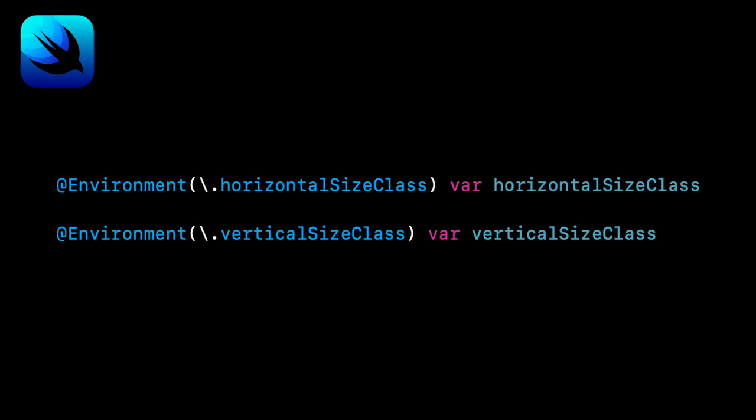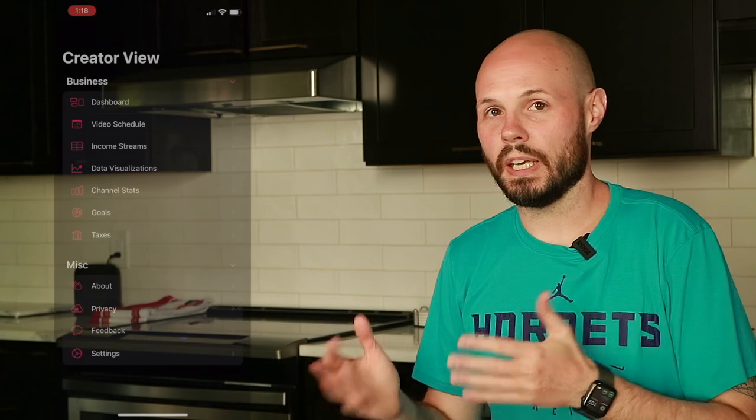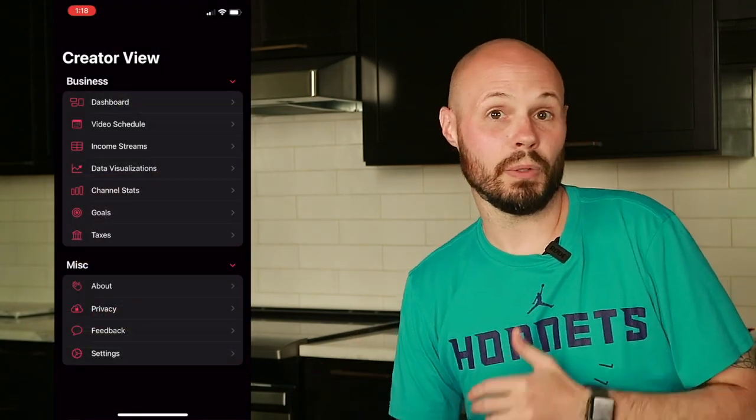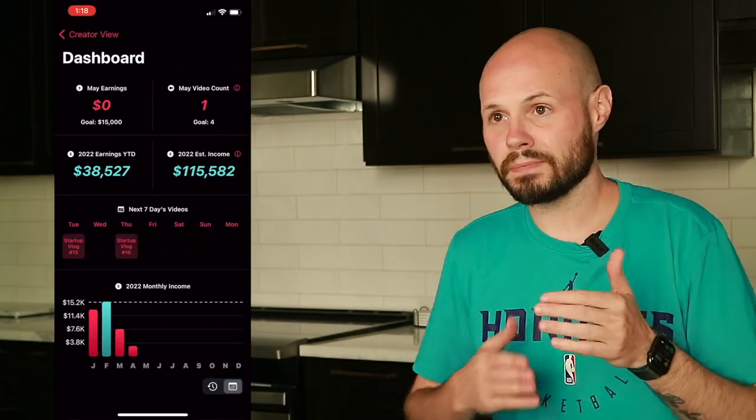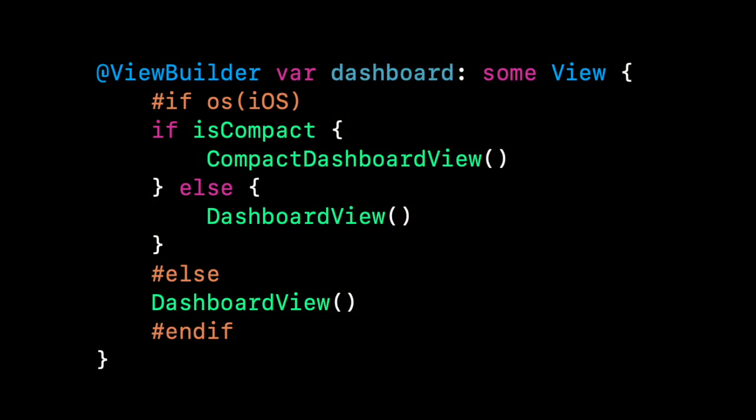SwiftUI has the size class environment variable to determine what size class you're in, and you can act accordingly. That is how I determined at the entry point of the screen — for us, that was pretty much the sidebar. When you tap on dashboard on the sidebar, what screen to show is the entry point. So I checked the size class there: if it was width compact, show the compact version of the screen; if not, show the iPad and Mac version.